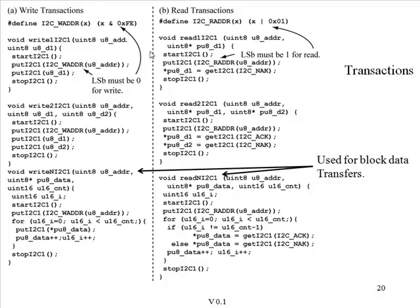Read transactions operate in a similar manner. We start, write the address with the read bit set to one, and then use the get function to read a single byte of data, using I2C NAK to indicate this is the last byte requested. When requesting two bytes, we start, put out the address with the read bit set, get the first byte and acknowledge it — indicating we'd like more data — then read the second byte and NAK it, indicating the end of the transaction, followed by the stop function.